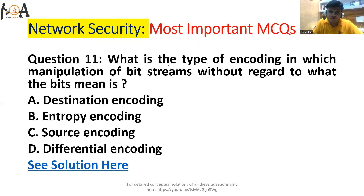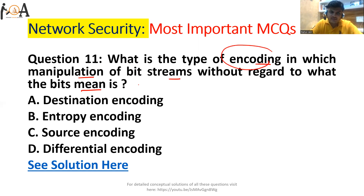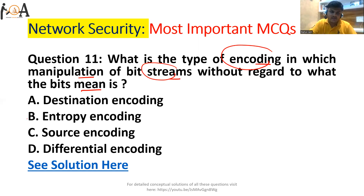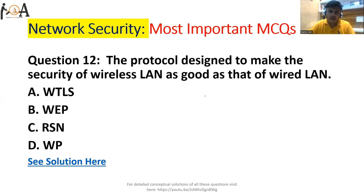Question number 11: What is the type of encoding in which manipulation of the bit streams without regard to what the bits mean? The answer is entropy encoding. Entropy encoding means we manipulate the bits without regard to what that bit exactly means. So entropy encoding is the correct answer for this question.